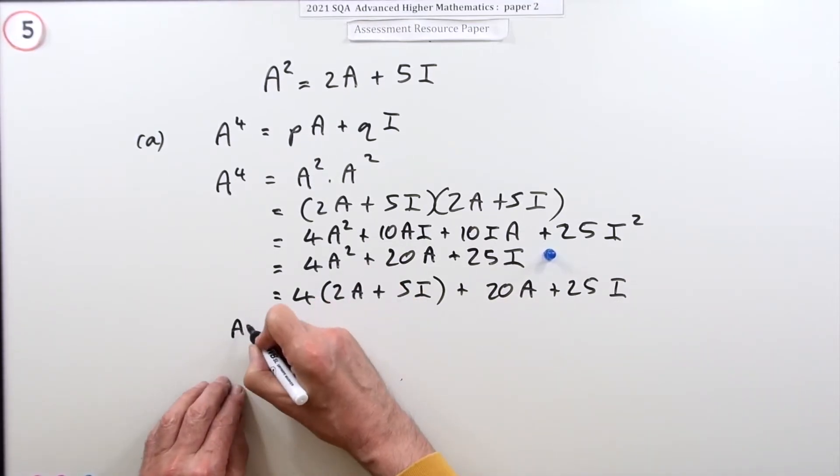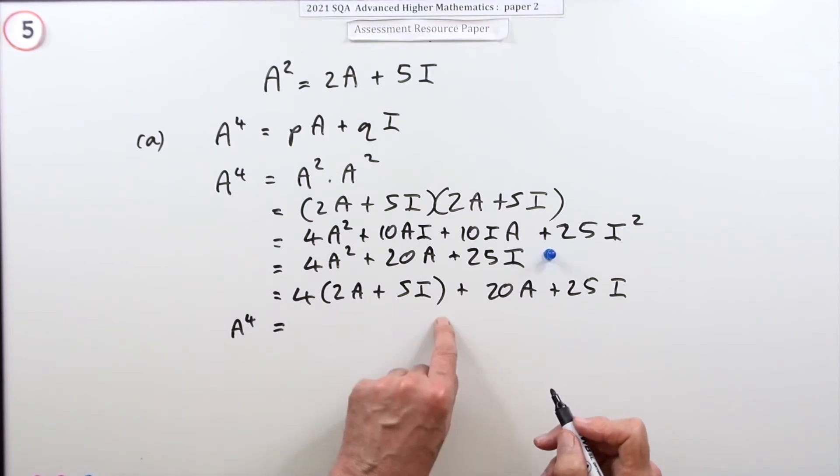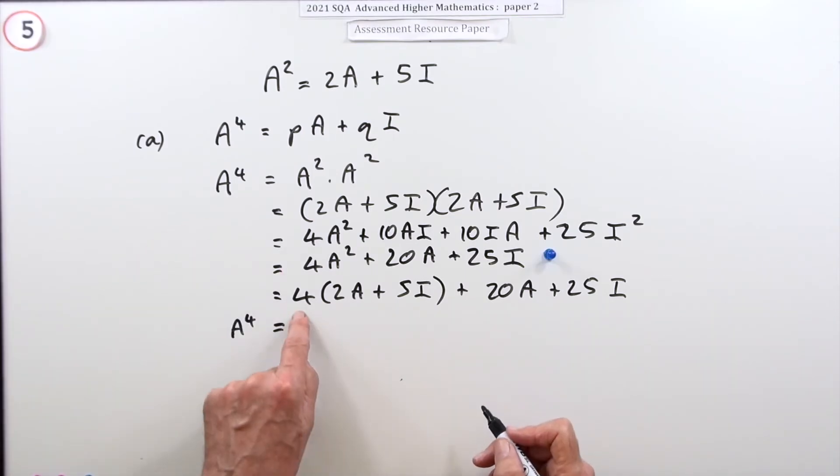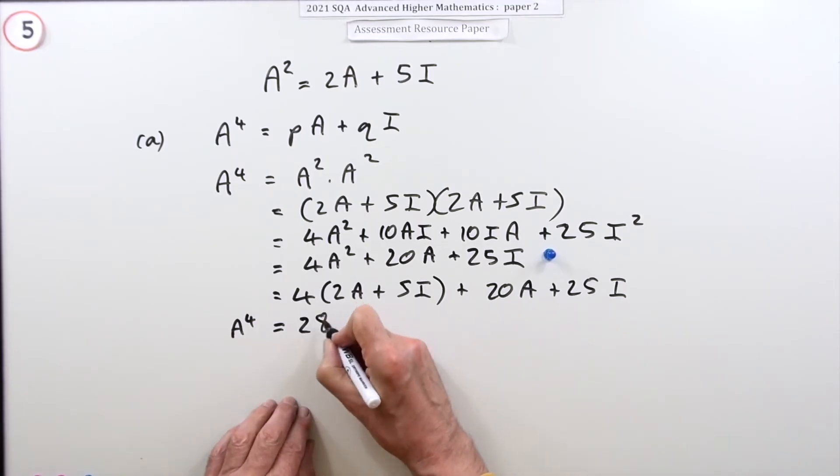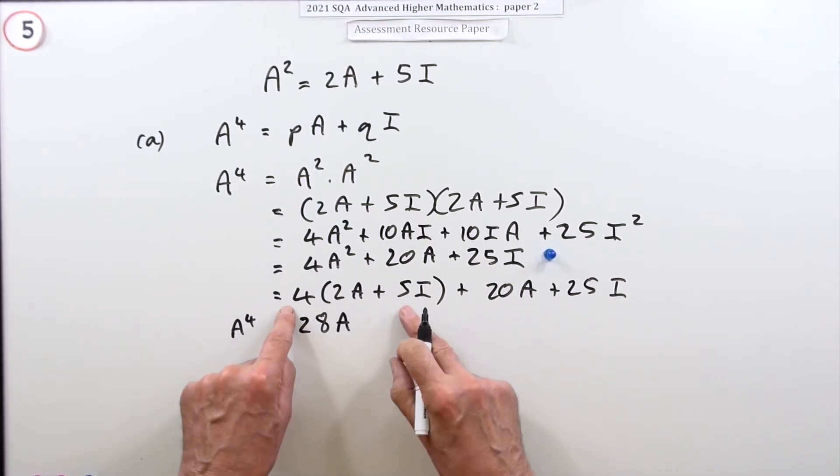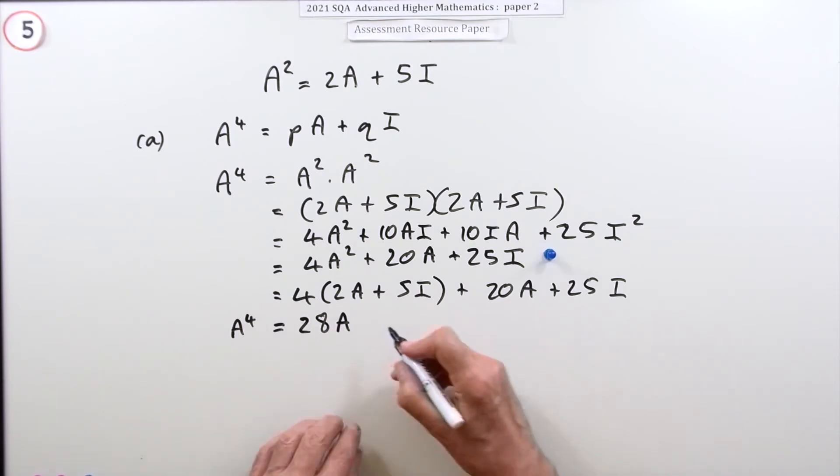But I think at this point I'll just go to the answer instead of writing that out and then writing it again. So you've got 8 lots of A and 20 lots of A is 28A, and you've got 20 of I and another 25, so that's 45I.